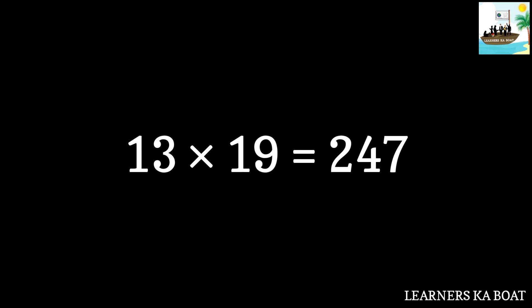13 nineteens are 247. 13 twenties are 260.